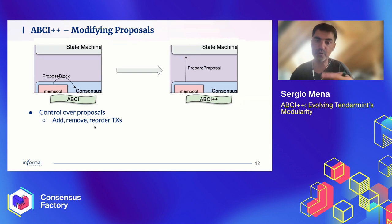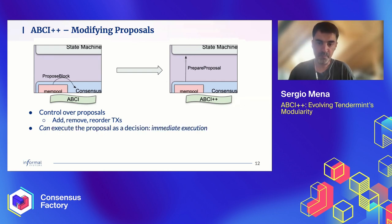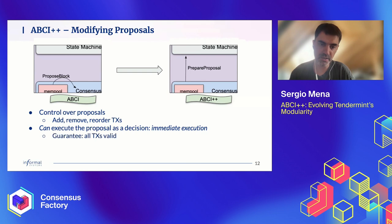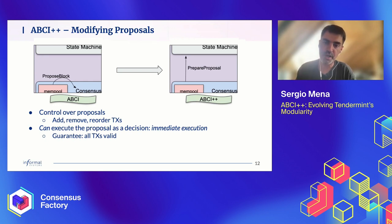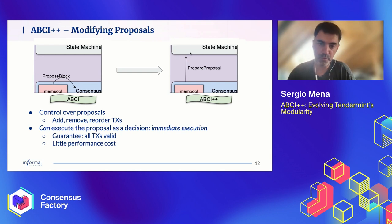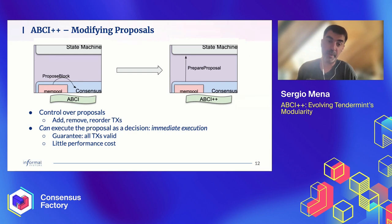Now the state machine has control over proposals. It can add transactions, remove transactions it realizes are invalid, or even reorder transactions so that as many as possible are valid. It can modify the proposal according to application-dependent rules. It can also optionally execute the proposal once it has prepared it — executing at this point rather than at decision time. This is what we call immediate execution. You have a full guarantee that all transactions included in the block will be valid, with little performance cost, since the work you expend can be reused at decision time.